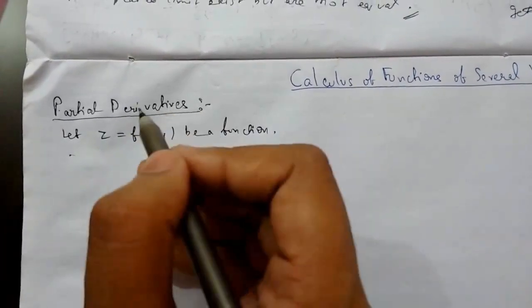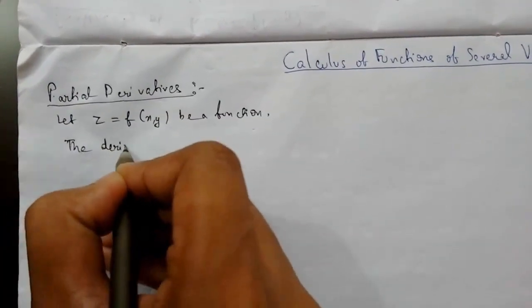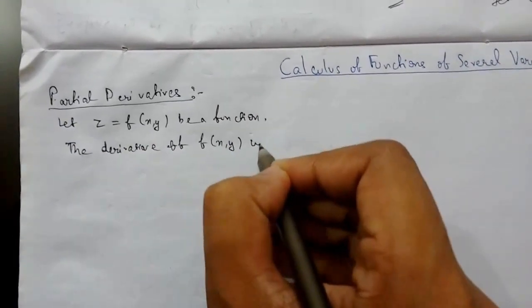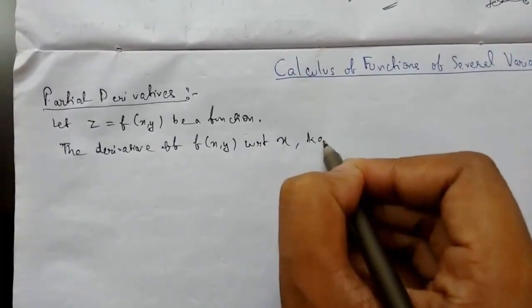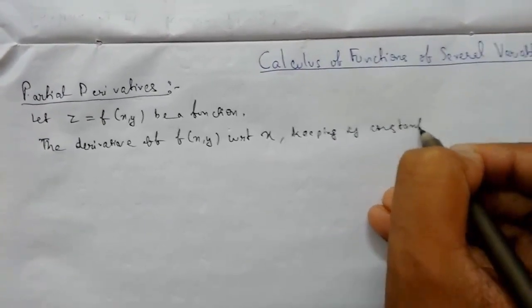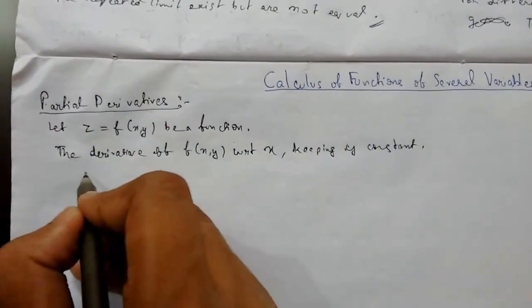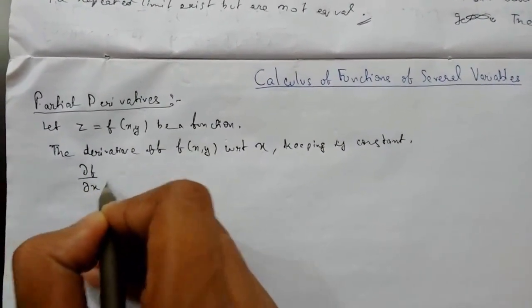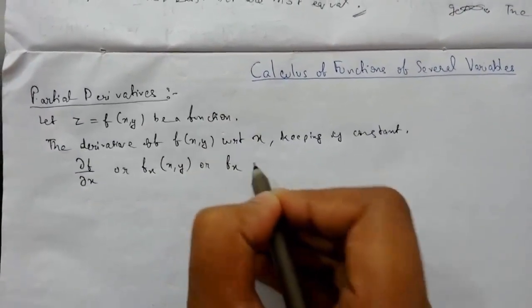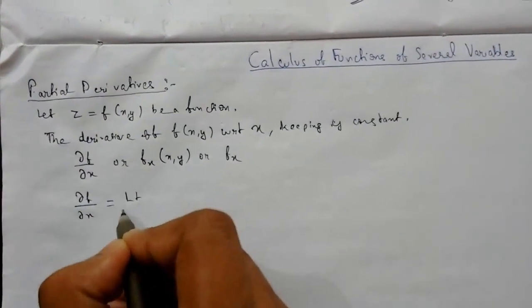The derivative of f(x, y) with respect to x, keeping y constant, is known as the partial derivative of f with respect to x. It is denoted by ∂f/∂x, or f_x(x, y), or simply f_x.